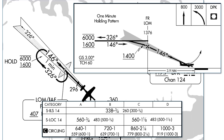The localizer only approach, as well as the circling approach, work a bit differently. We'll hold 1,400 again, but this time we'll begin a descent when passing Frick, using either our ADF, marker beacon, or GPS to identify it, and we'll go down to the minimum descent altitude. For a category A or B aircraft, this will be 560 feet MSL for the localizer approach, and if we're circling to land, the MDA will be 640 or 720. The other figures on the plate are the required flight visibility to go below minimums — three-quarters of a mile for the ILS and LOC, and one full statute mile for the circling for cats A and B.